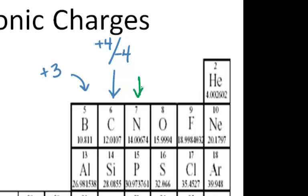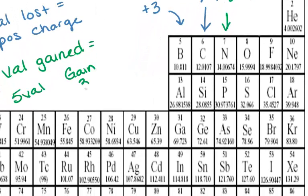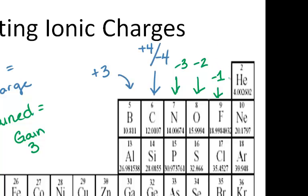Well, group fifteen has five valence electrons. If it has five valence electrons, that means that it wants to gain three. Given that it's going to gain three electrons, group fifteen will have a negative three. Group sixteen will want to gain two, therefore it will be a negative two charge. Group seventeen will want to gain one, so it will be a negative one charge.